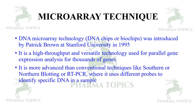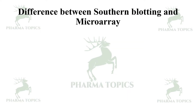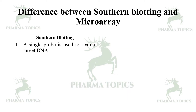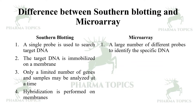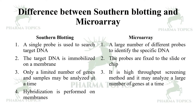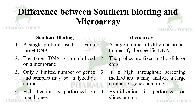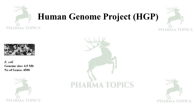In Southern blotting, a single probe is used to search the target DNA. The target DNA is immobilized on a membrane, and only a limited number of genes and samples may be analyzed at a time. Hybridization is performed on membranes like nitrocellulose. In contrast, microarray uses a large number of different probes to identify specific DNA. The probes are fixed to a slide or chip, it is a high-throughput screening method, and hybridization is performed on slides or chips.